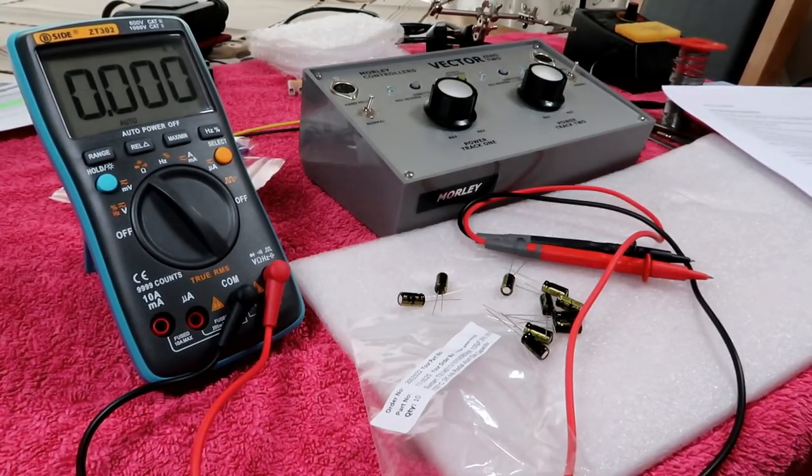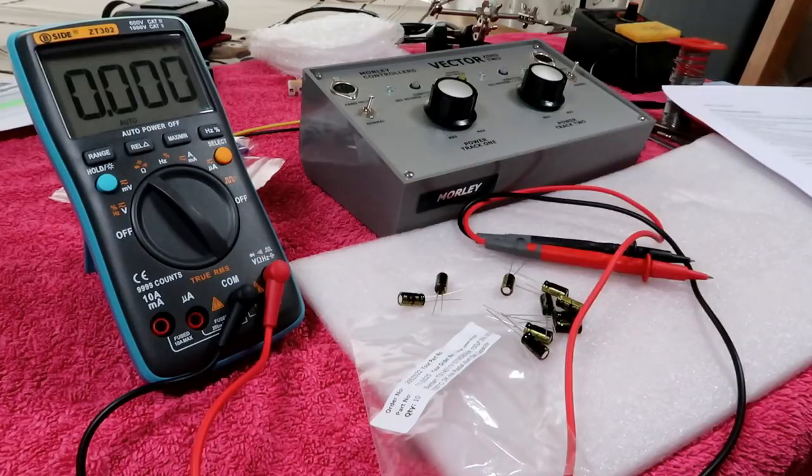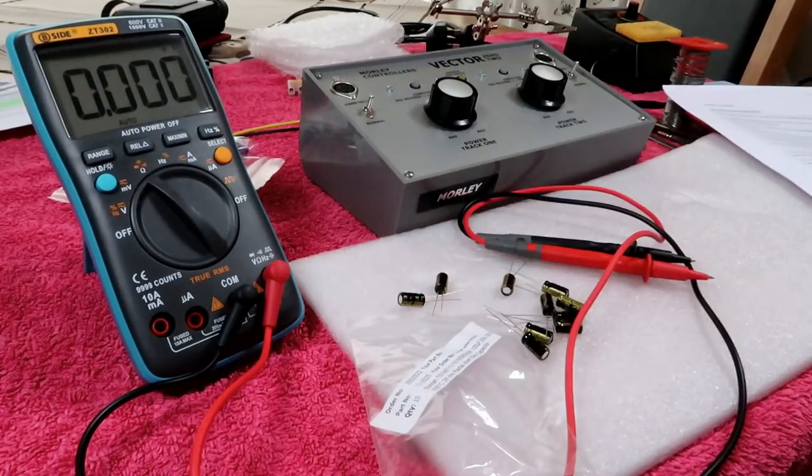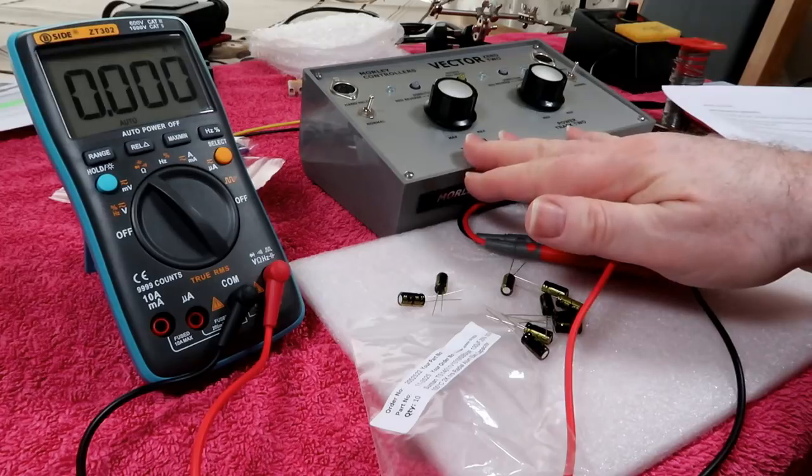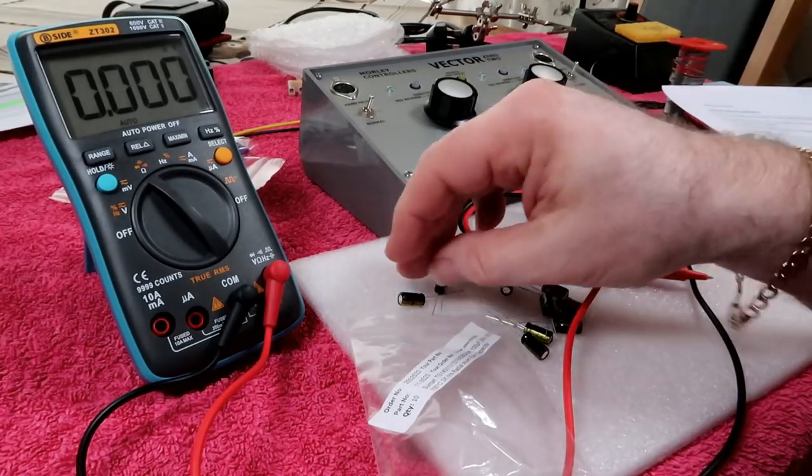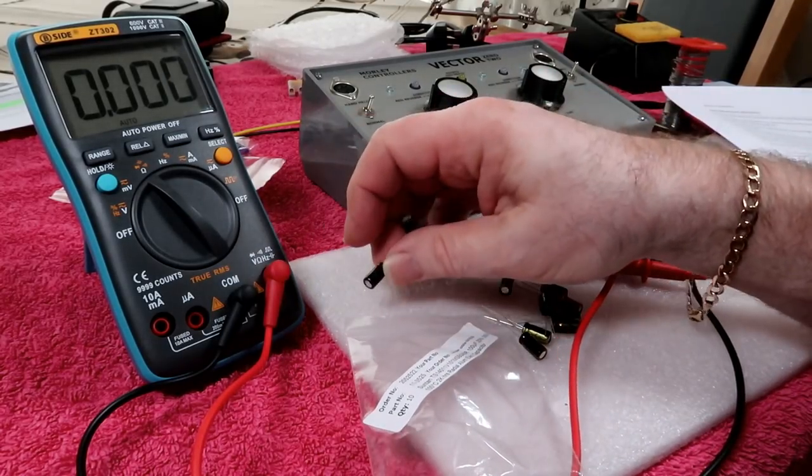And we know that some motors need this ripple to work smoothly and to turn over nice and slowly, whereas others which draw very little current - and this is the key thing - because they draw such little current, the capacitor is able to provide a perfectly smooth DC supply for them.